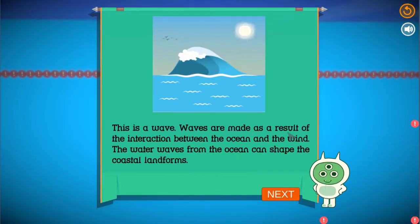This is a wave. Waves are made as a result of the interaction between the ocean and the wind. The water waves from the ocean can shape the coastal landforms.